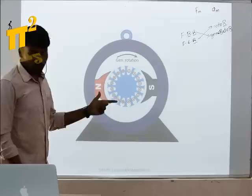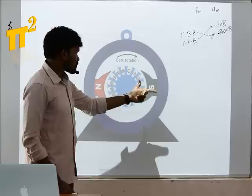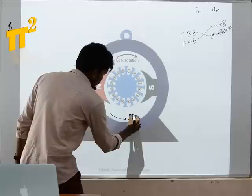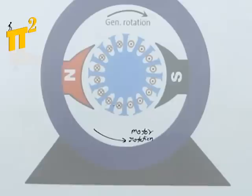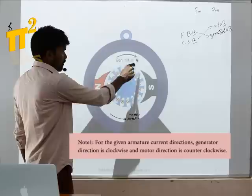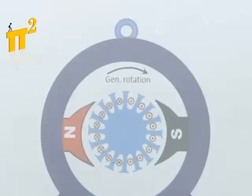If we consider this as a motor, the direction of rotation for these current directions is counterclockwise. So for the same cross and dot: if I consider this machine as a generator, direction of rotation is clockwise; if I consider the same machine as a motor, direction of rotation of the rotor is counterclockwise.